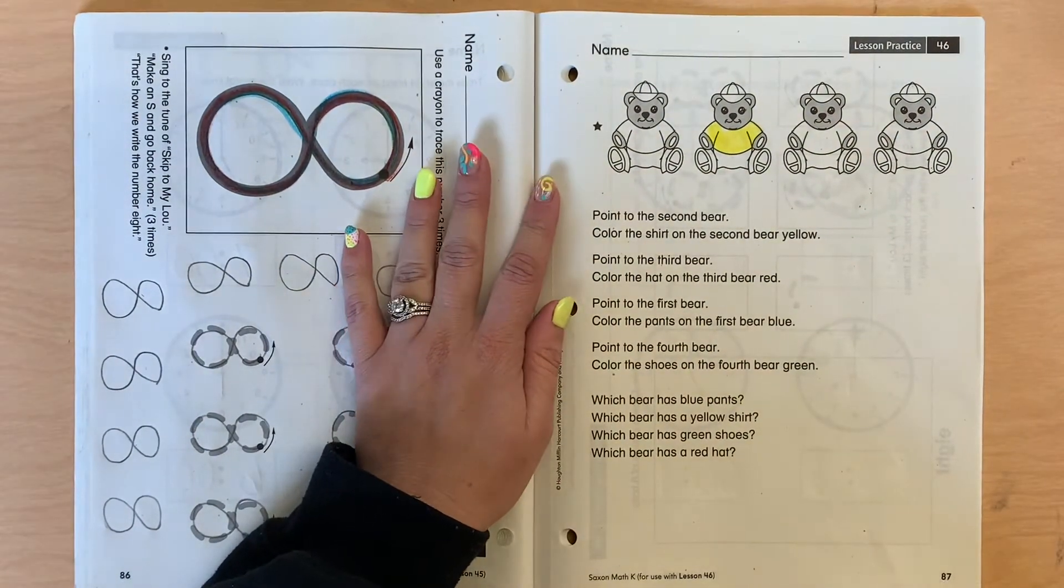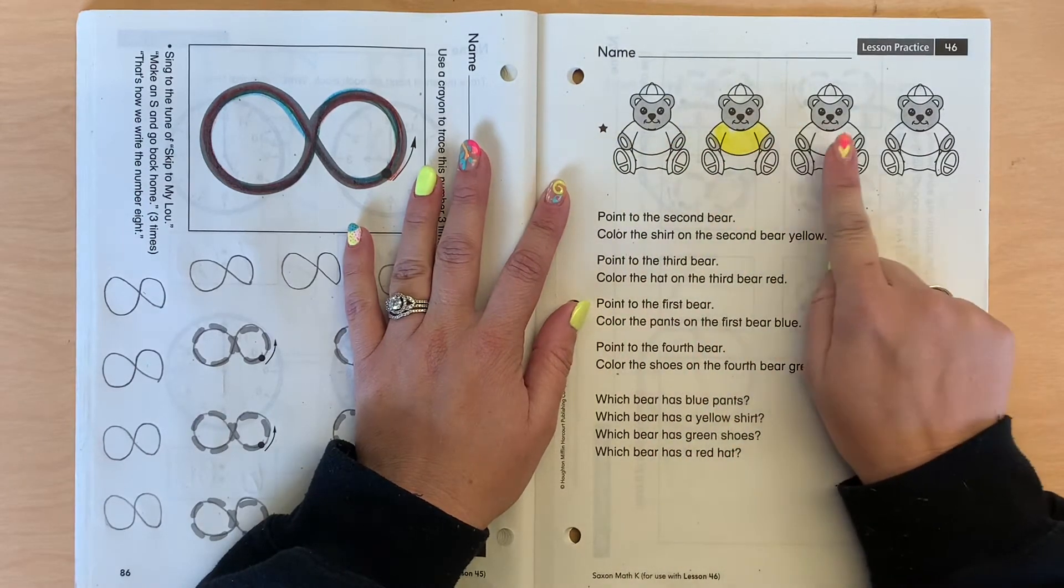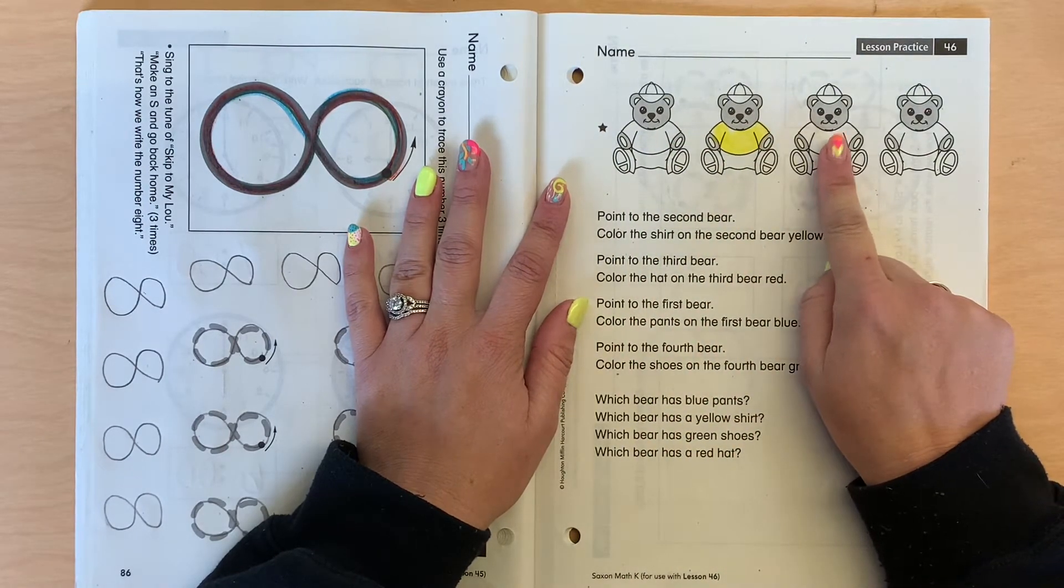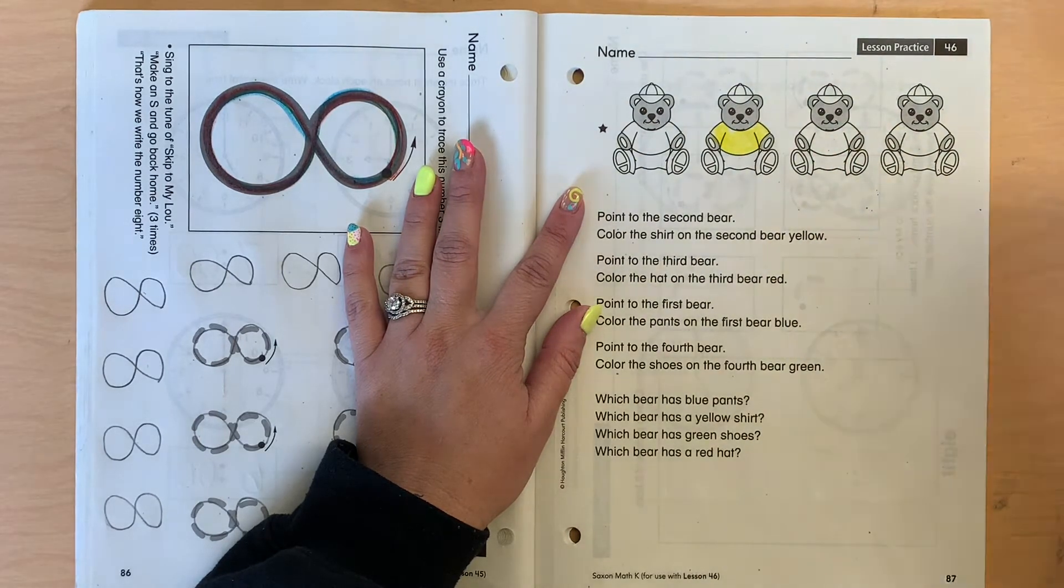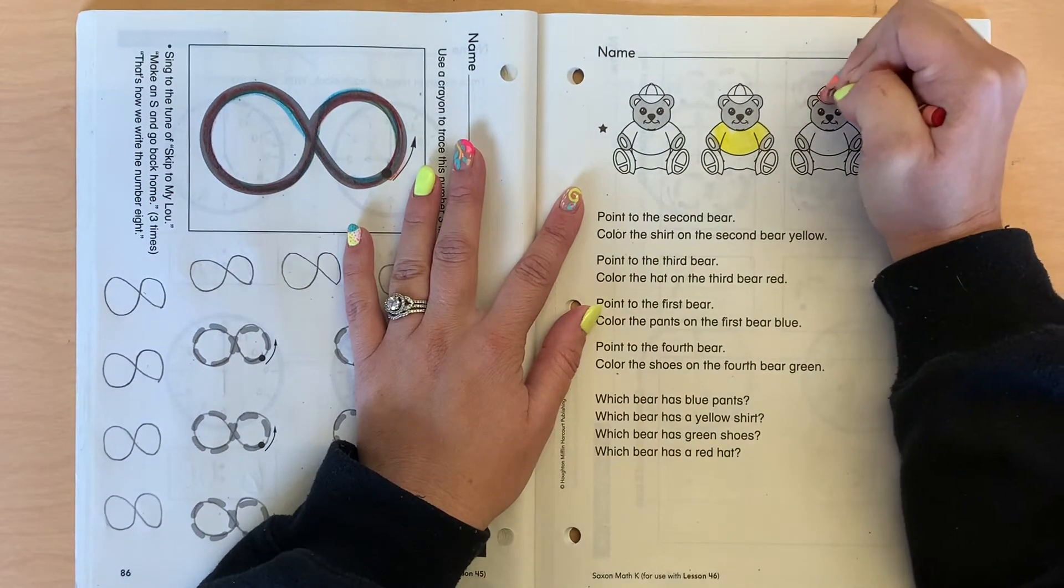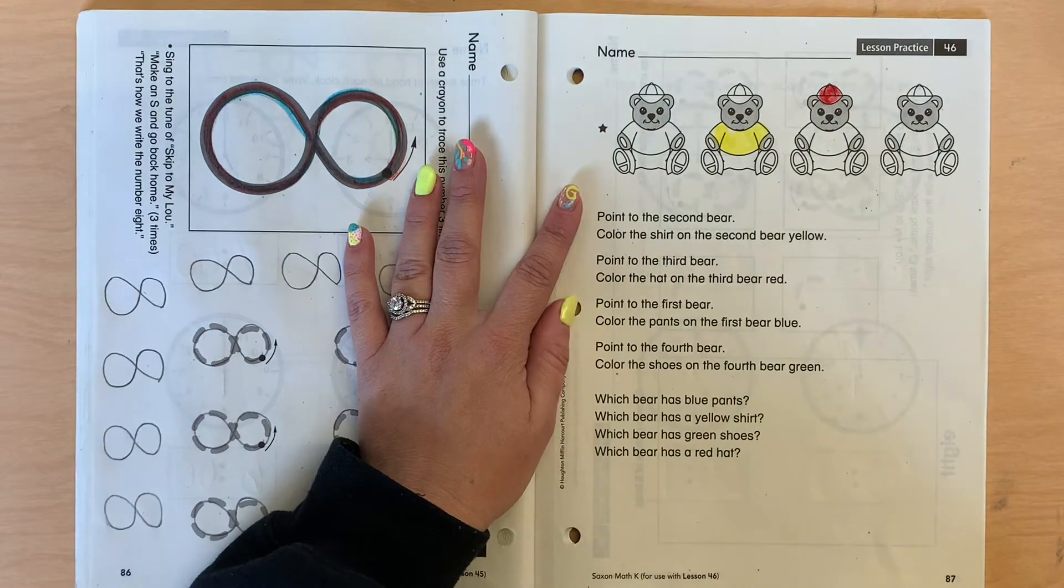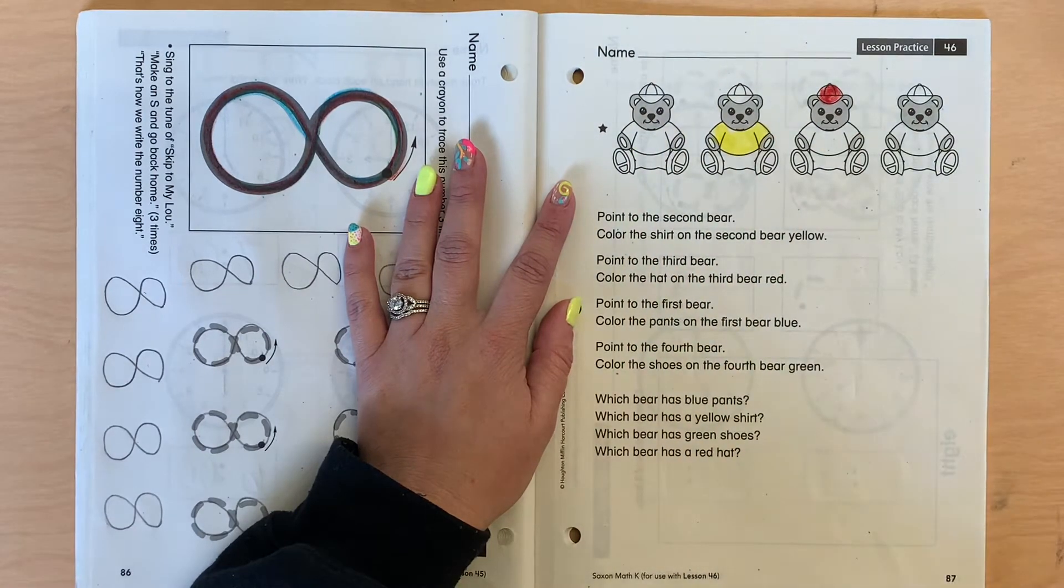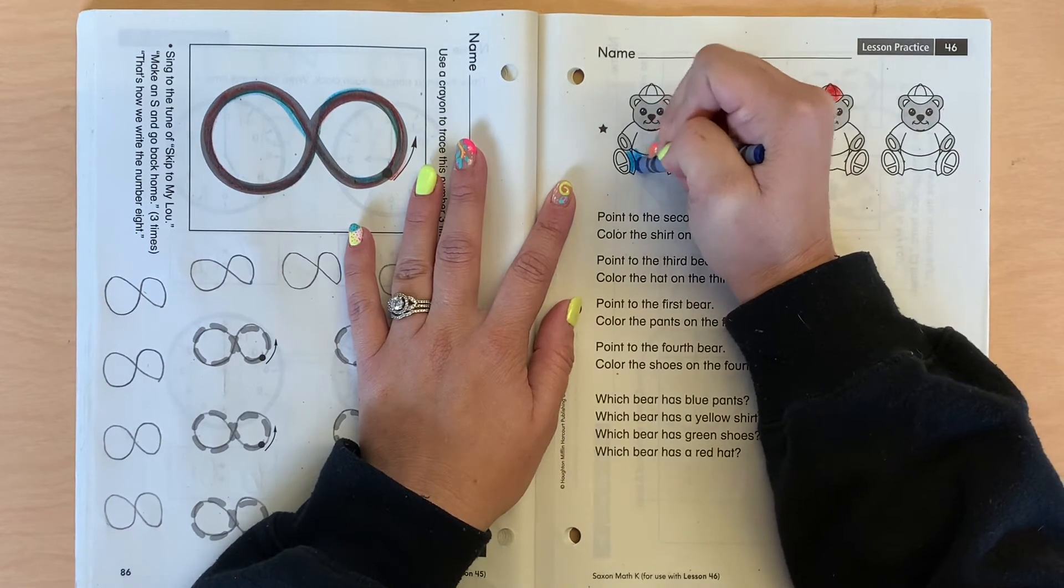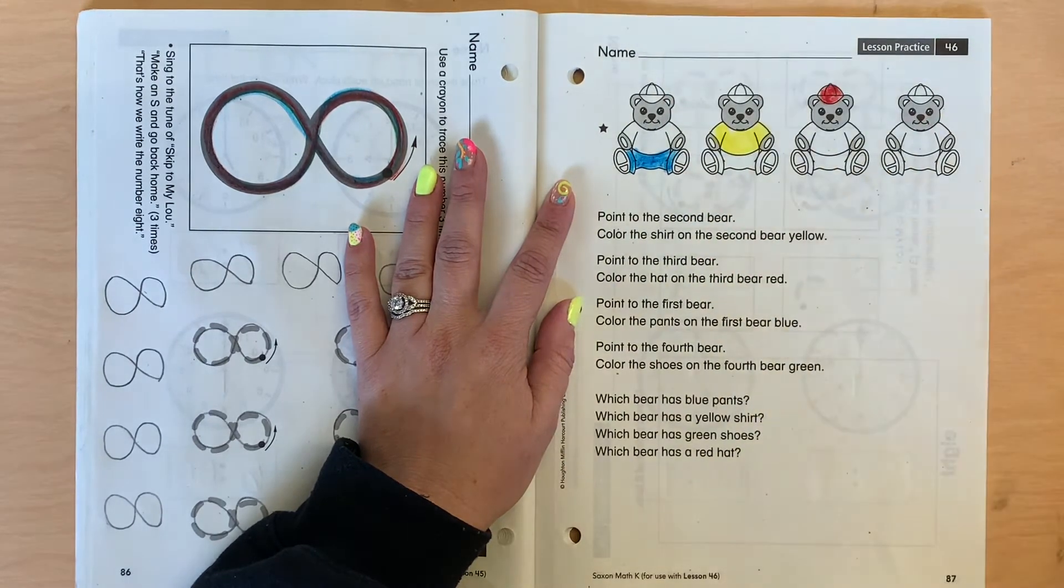Okay. Point to the third bear. First, second, third. Color the hat on the third bear red. Just his hat. Easy enough. Ready? Point to the first bear. First. Color the pants on the first bear blue. Just his pants. Just his pants.